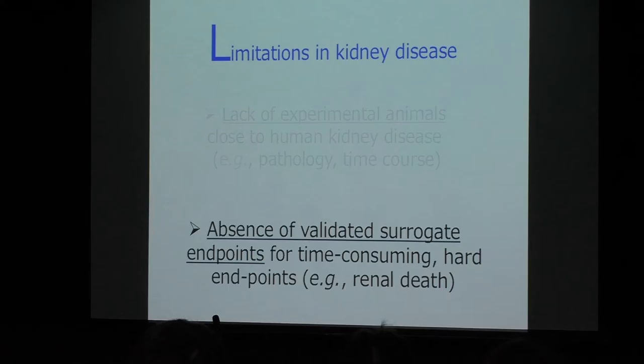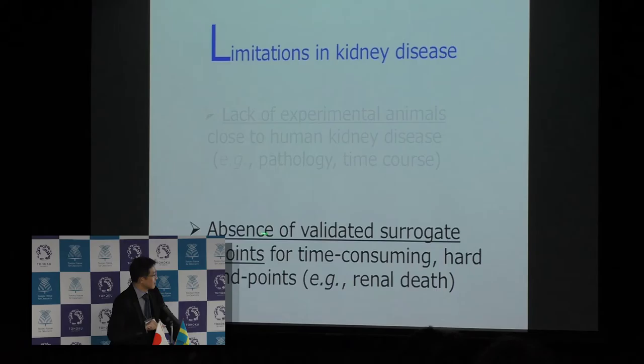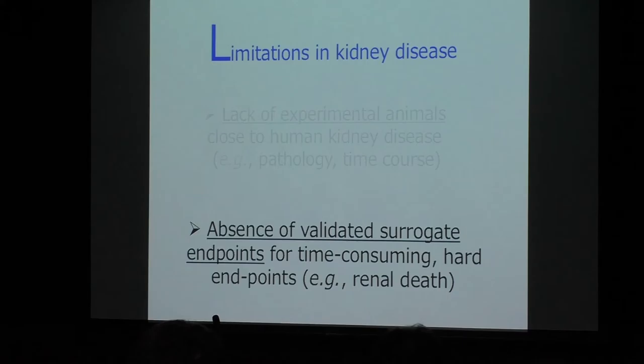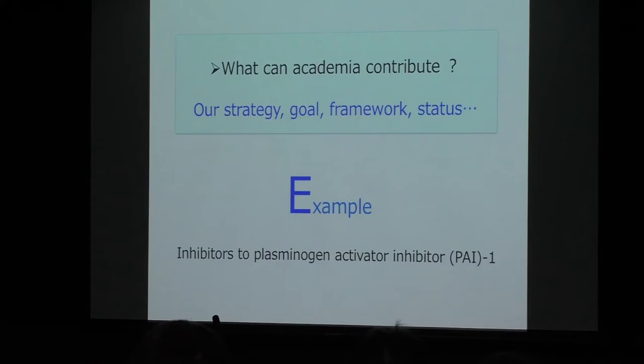The second challenge is that drug discovery in kidney disease suffers from the absence of validated surrogate endpoints for time-consuming hard endpoints such as renal death. It usually takes at least a few years to evaluate the outcome of clinical trials in kidney disease, and large trials with substantial human and financial resources are always required. Surrogate endpoints might shorten efficacy evaluation, but their validation remains uncertain in kidney disease.